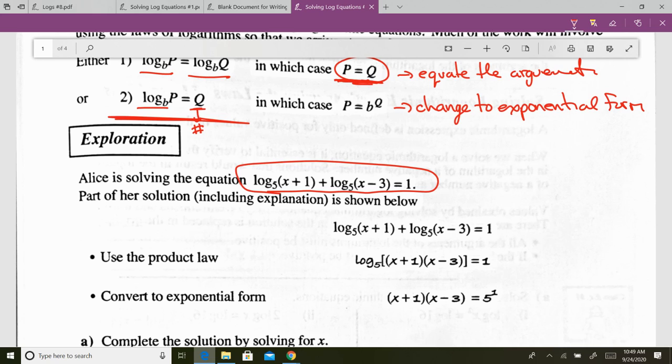So we change this to log base five of x plus one times x minus three. This then matches this type of equation because it's a log. Even though the argument is two binomials being multiplied together, it doesn't matter. It's log of something equals a number. When you have that, you change to exponential form.